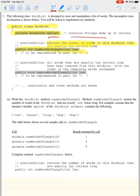Whatever we pass through here, that's gonna be actually very simple. Write the WordList method numWordsOfLength. Method numWordsOfLength returns the number of words in the WordList that are exactly len letters long.